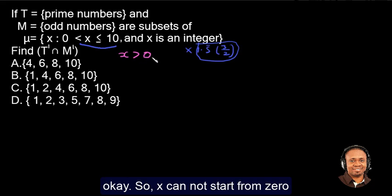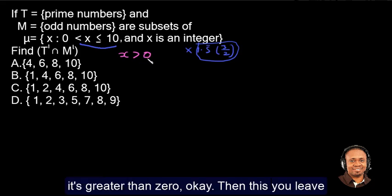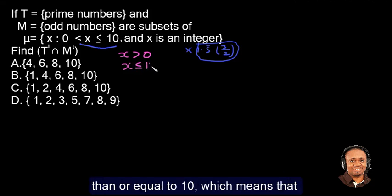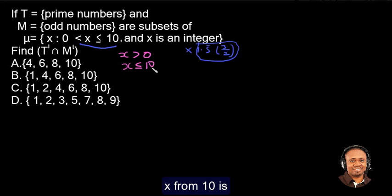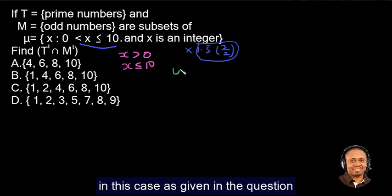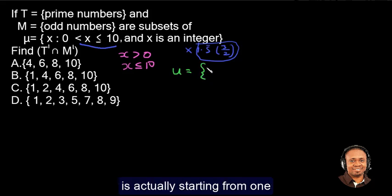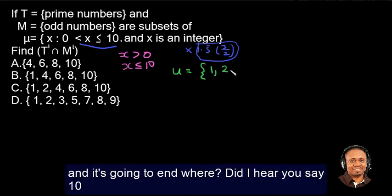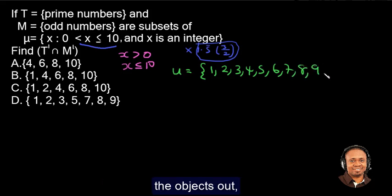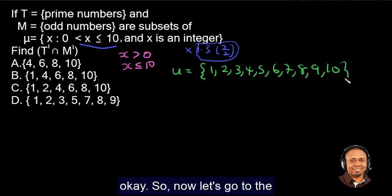So x cannot start from 0, it's greater than 0. Then this you leave as is, which is the x less than or equal to 10, which means that x from 10 starts counting down. So the universal set in this case as given in the question is actually starting from 1 and is going to end where? Did I hear you say 10? Exactly. So let us quickly write all the objects out.